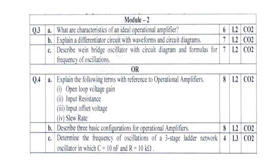In module two: what are the characteristics of an ideal operational amplifier? Write what an ideal op-amp is and determine its characteristics — six marks. Explain the differentiator circuit with waveform and circuit diagram — seven marks. Describe the Wien bridge oscillator with circuit diagram and formula for the frequency of oscillation — seven marks.